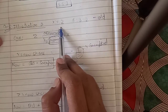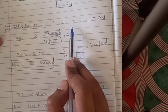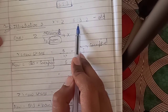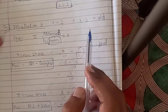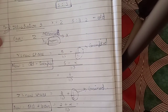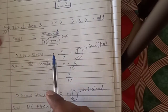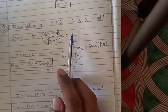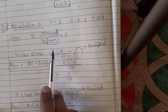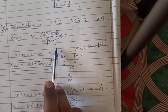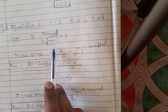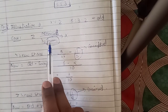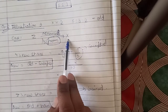There are 3 partners X, Y and Z. Their profit sharing ratio is 5:3:2. This is their old share, their old profit sharing ratio. Now case 1 says that Z acquires 1/5 share from X.